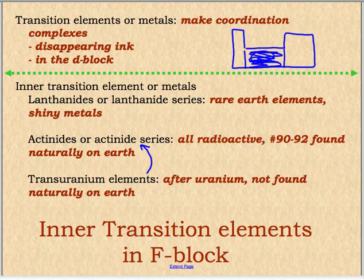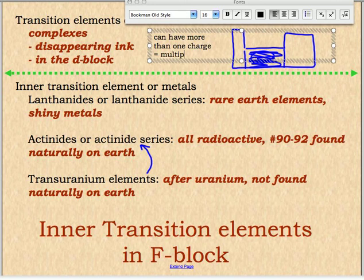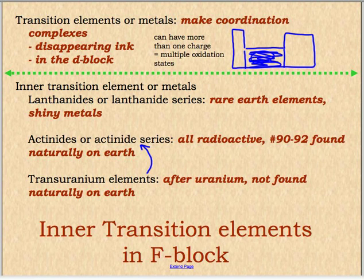The next section is the transition metals or elements. You can see they're right in the middle section of the periodic table, and that is called the D block. They have some interesting chemistry — they make things called coordination complexes, which is very unusual chemistry. One example is disappearing ink; another is hemoglobin in your blood, so they have a lot of biological impact. A lot of them can also become poisons. One thing these elements can have is more than one charge — what we call multiple oxidation states. They have some special abilities because they are a unique section of the periodic table.